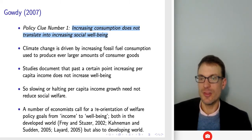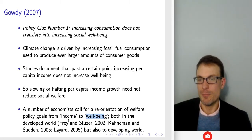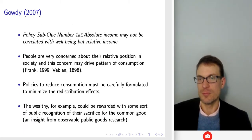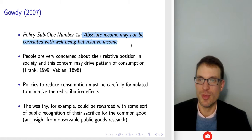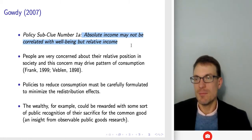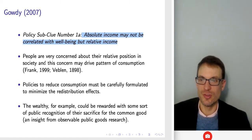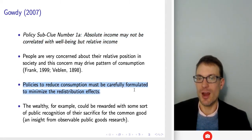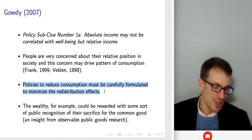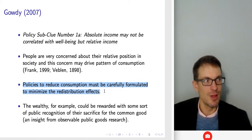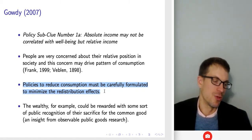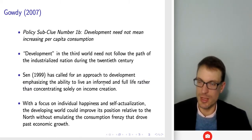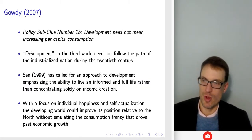We might think about reconfiguring our welfare policy goals from income-related to well-being-related, both in the developed and developing world. Absolute income may not be correlated with well-being, but relative income might be — people are very concerned about their relative position in society, and this concern may drive patterns of consumption. Policies to reduce consumption must be carefully formulated to minimize redistribution effects.